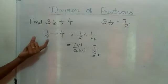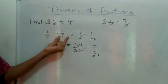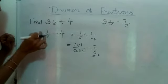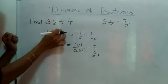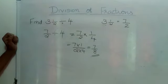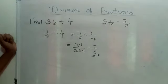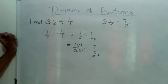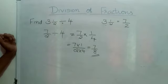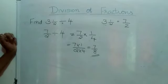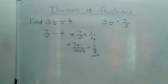Here the first number is a fraction and the second is a whole number. Whenever you get a question like this, keep the first side the same and multiply by the reciprocal of the second side. Similar problems you can do in Exercise 2.4. All the methods are the same as we discussed. Try to do the problems in Exercise 2.3 and Exercise 2.4. If you have any doubts, you can ask. This is all about division of fractions. Thank you.